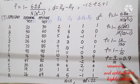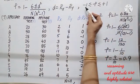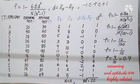Remember, the rho value should lie between minus 1 and plus 1.